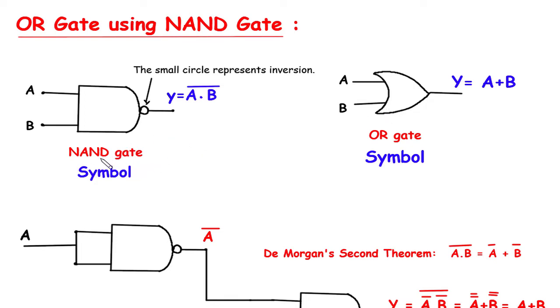The output for NAND gate is y equals a dot b whole bar. The output for OR gate is y equals a plus b.